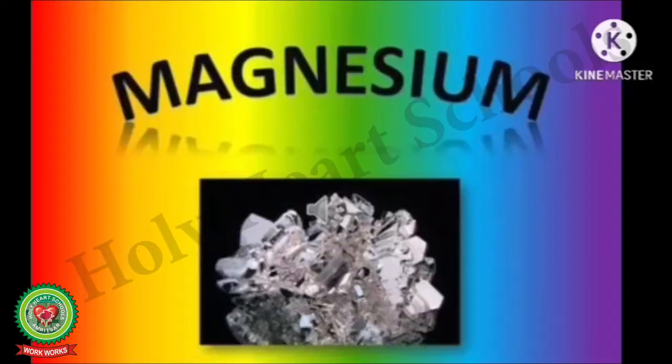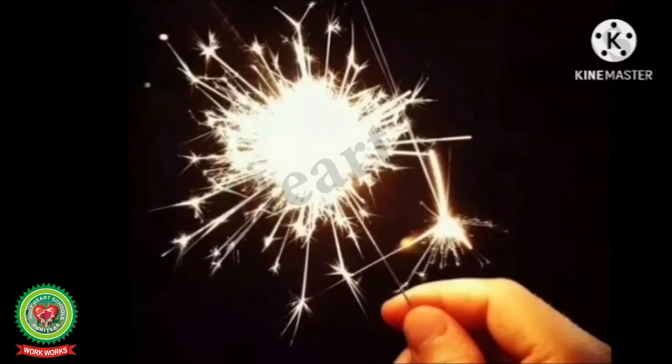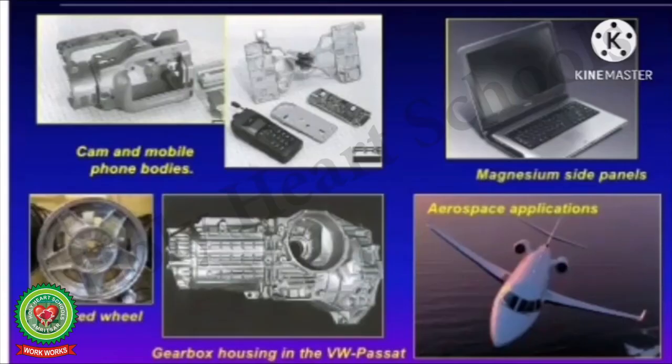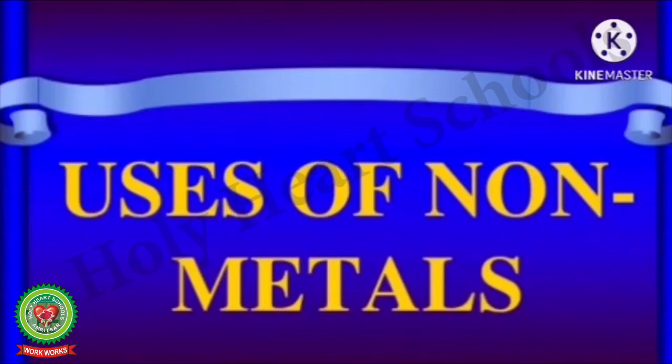Magnesium: Magnesium metal is used in fireworks because it burns with a dazzling white flame. Magnesium is also used in camera and mobile phone bodies, alloyed wheels, gearbox housings, magnesium side panels, and aerospace applications.